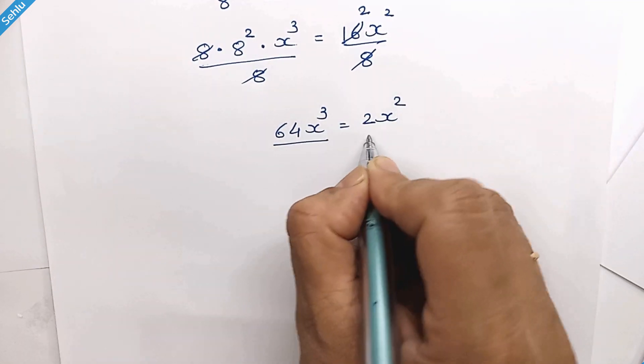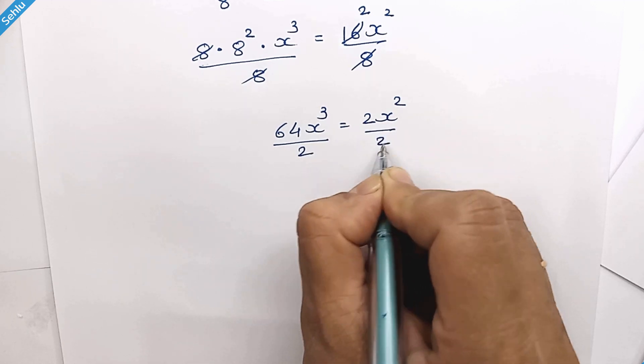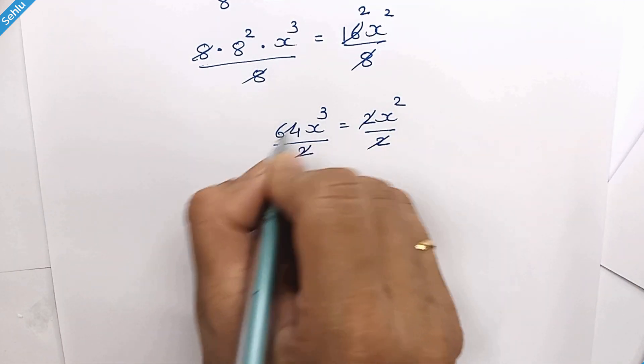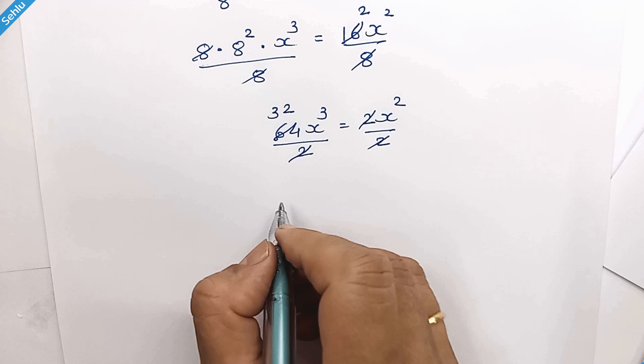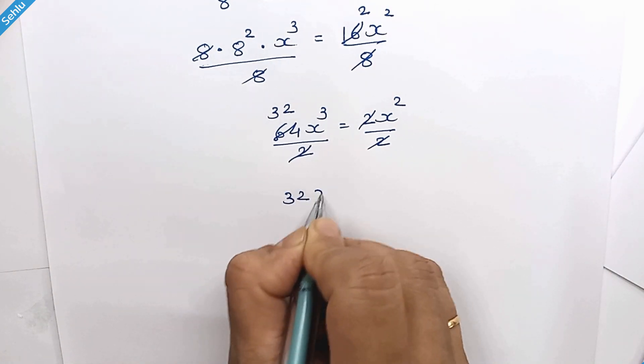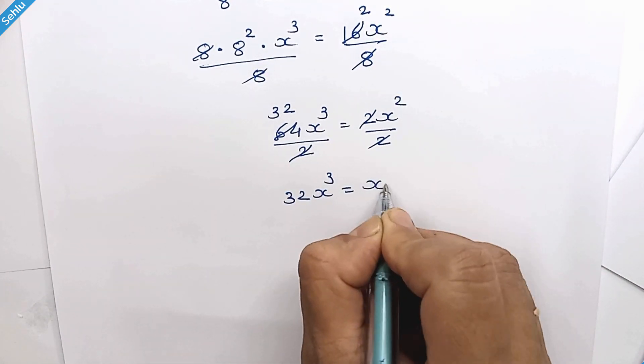2x square. Divide by 2 both the sides. These 2 get cancelled out. And here we have 32. So we have 32x cube is equal to x square.